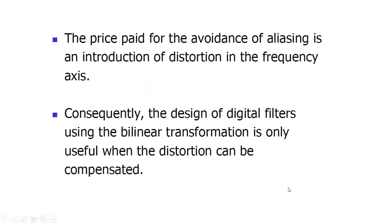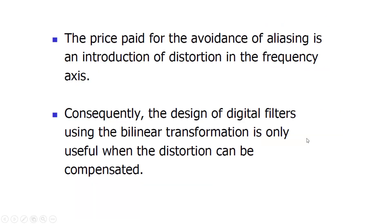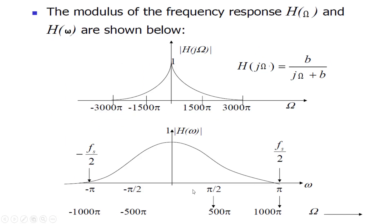Going around the unit circle: this value is zero, going one way reaches pi, and from minus pi it comes back to zero. So the digital frequency ranges from minus pi to pi covering the complete circle. The complete analog spectrum from minus infinity to plus infinity will be mapped to the range minus pi to pi in the digital domain.